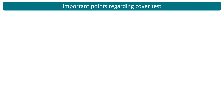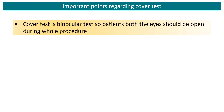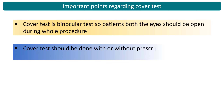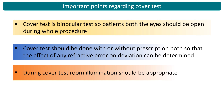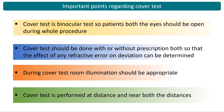The cover test is a binocular test, so the patient's both eyes should be open during the whole procedure. The cover test should be done with and without prescription so the effect of any refractive error on deviation can be determined, though it is usually done with prescription only. Room illumination should be appropriate so the examiner can observe any deviation easily. The cover test is performed at both distance and near, but if the patient uses an intermediate distance for close work, perform the near cover test at that habitual working distance.